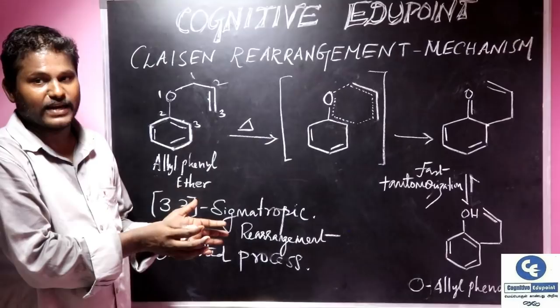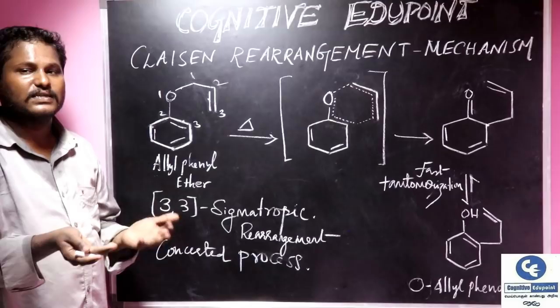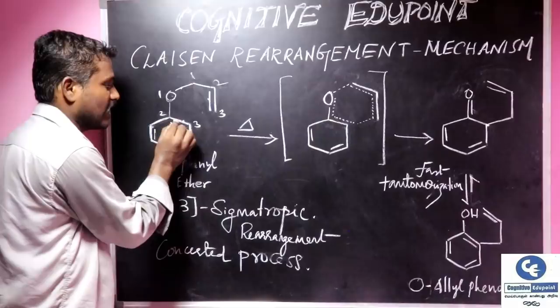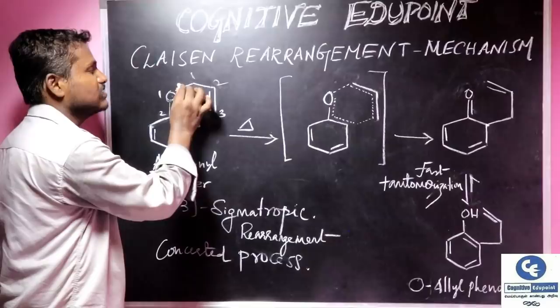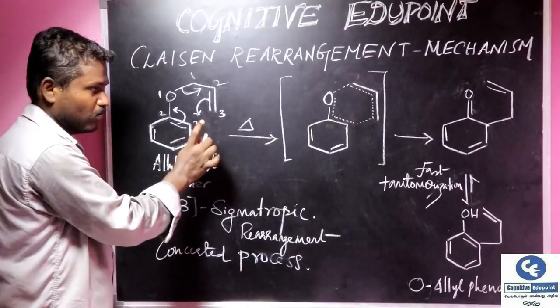The reaction follows a concerted mechanism. All the bonds are broken simultaneously and all the new bonds are formed simultaneously. So it happens at once. For example, the bond between carbon 2 to 3, pi-bond moves to carbon to oxygen and oxygen-carbon bond moves to here. This pi-bond moves to form a new carbon-carbon bond.